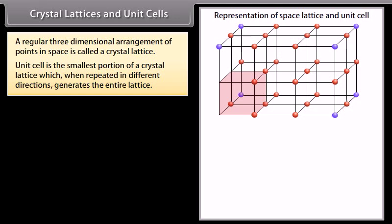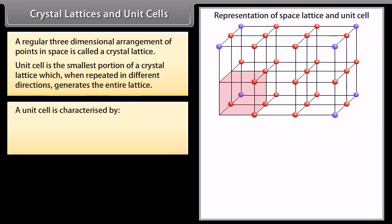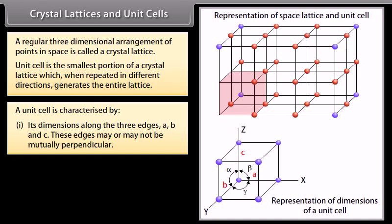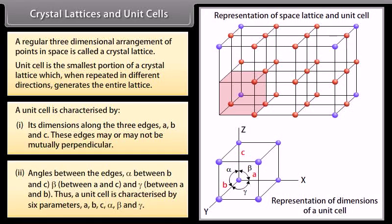Unit cell is characterized by its dimensions along the three edges A, B and C. These edges may or may not be mutually perpendicular. And angles between the edges: Alpha between B and C, Beta between A and C, and Gamma between A and B. Thus a unit cell is characterized by six parameters: A, B, C, Alpha, Beta, and Gamma.